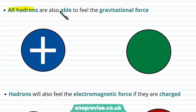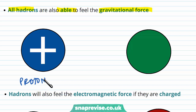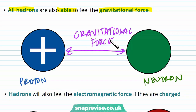All hadrons are also able to feel the gravitational force. The gravitational force is the force that attracts masses, and both protons and neutrons, which are within the nucleus, have mass — so they therefore experience the gravitational force.